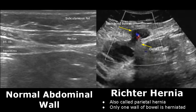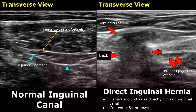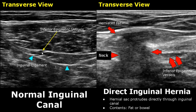Here we have a normal inguinal canal image in transverse view. These three vessels are the inferior epigastric vessels. These three vessels can be used as a landmark to locate the inguinal canal.